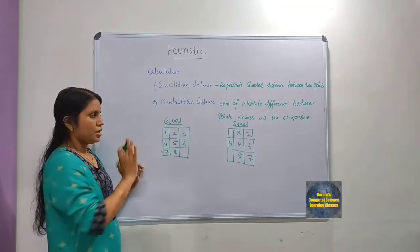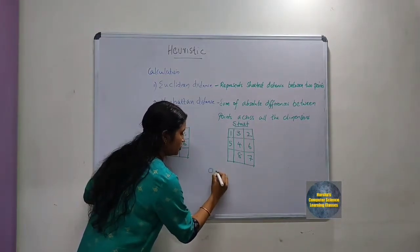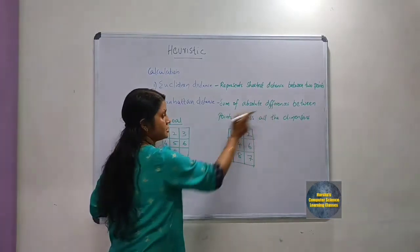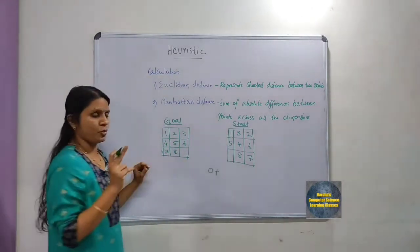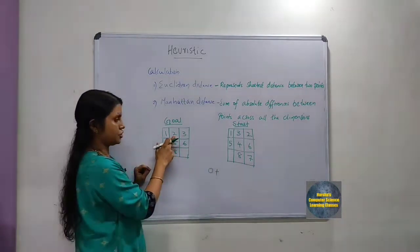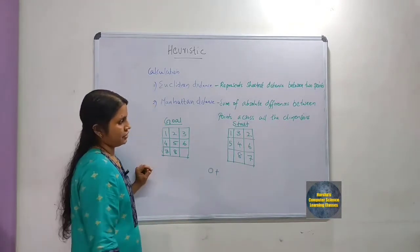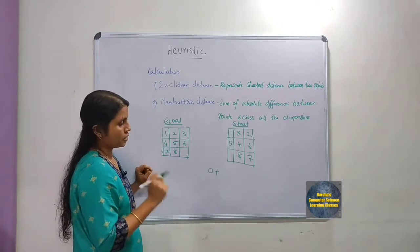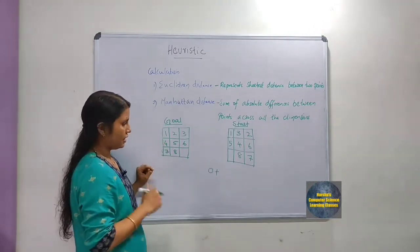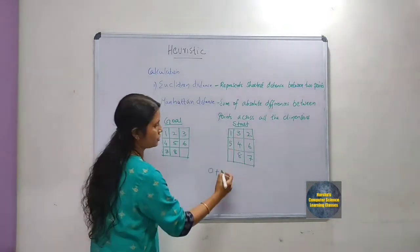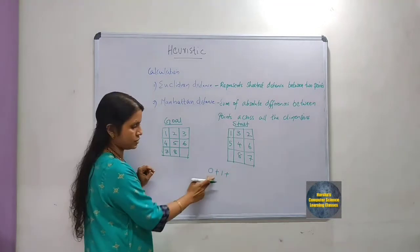In the eight-puzzle example, if a tile's position is the same in the start state and the goal state, no movement is required, so you put zero. For tile two, its position in the goal state is different from the start state — we need to move it one position to the left. So that counts as one move.